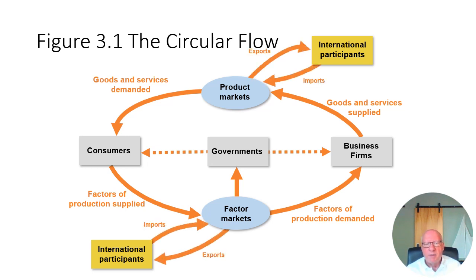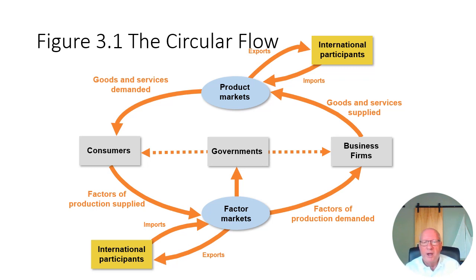We also talked about the circular flow with international participants. International participants are just another name for foreign business firms. Foreign business firms produce goods for the product market — examples include Samsung and Hyundai from South Korea and Mercedes from Germany. These international participants also deal with the factor markets, though it's more difficult to participate in labor markets across international borders because you need a work permit issued by government, so those things don't flow very easily.